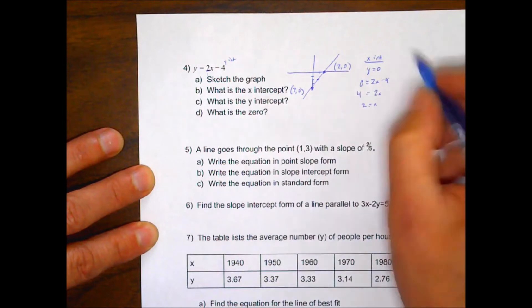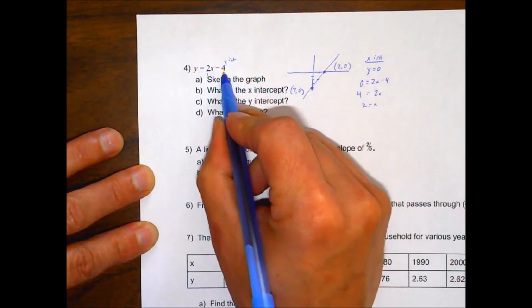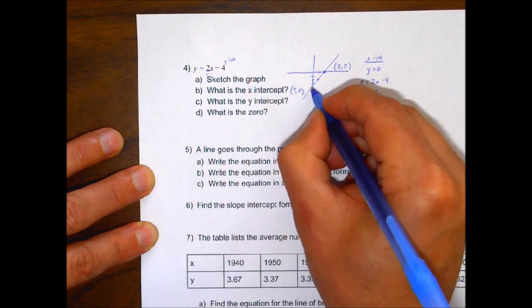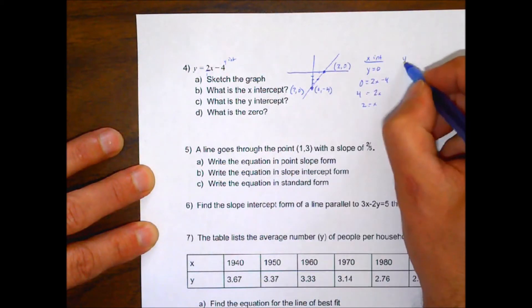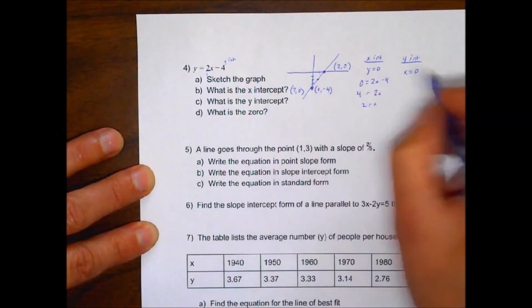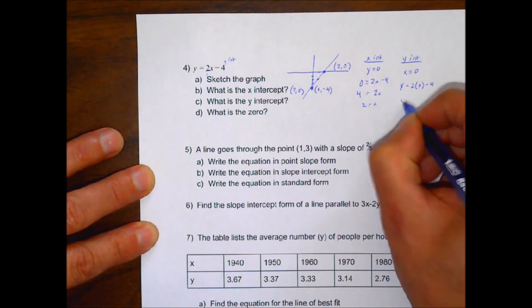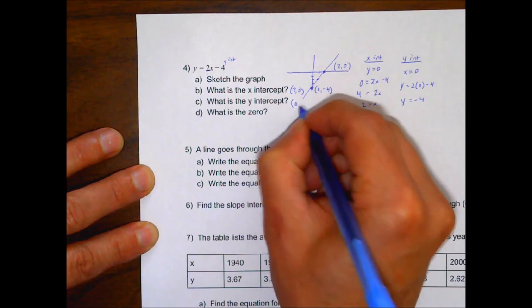Your y-intercept, you can find that from the equation right there, or look at it on the graph. That point right there, or algebraically. When you find your y-intercept, you always set your x equal to 0. So we set y is equal to 2 times 0 minus 4. 2 times 0 is 0. 0 minus 4 is negative 4. So our y-intercept is at 0, negative 4.